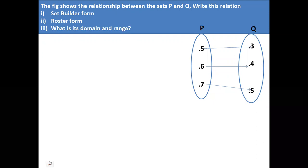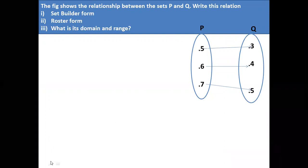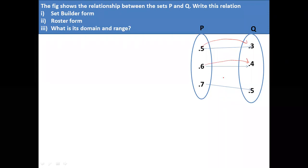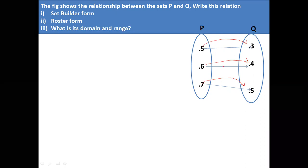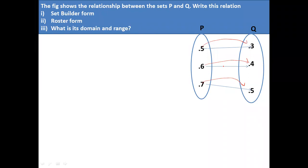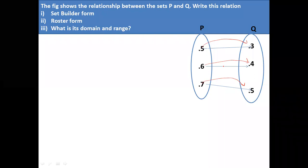What is the relation between P and Q? How are the numbers related? You can see 5 is mapped to 3, 5 is mapped to 4, 7 is mapped to 5. What is the relation between the first element and the second element? Y is equal to X minus 2, or the difference is 2. Good students.